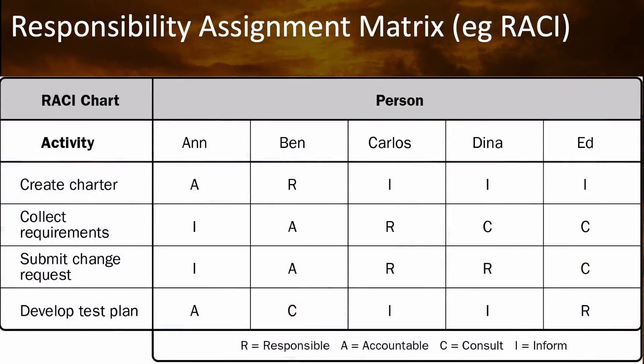Another valuable technique is the Responsibility Assignment Matrix. One type of Responsibility Assignment Matrix is called the RACI chart. RACI stands for Responsible, Accountable, Consulted, and Informed. In a chart like this, you identify the different activities or responsibilities along the side — one row for each one. Then in the different columns, you list the different people that are going to be working on your project and responsible for different parts of it.